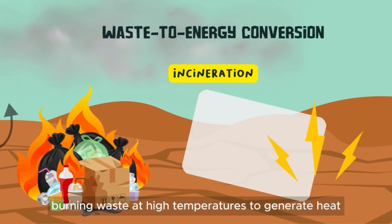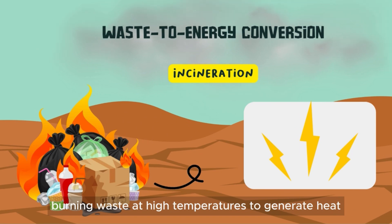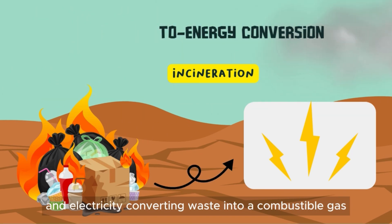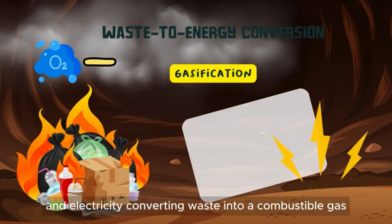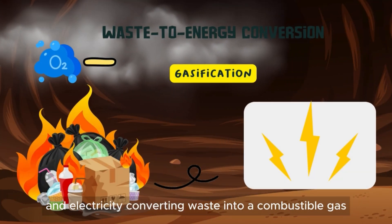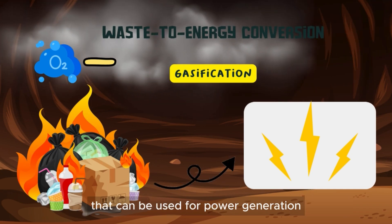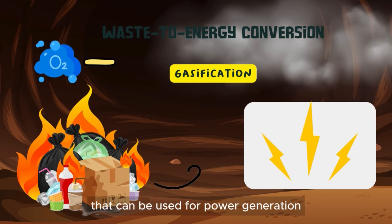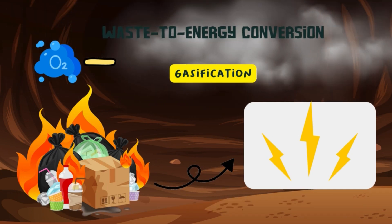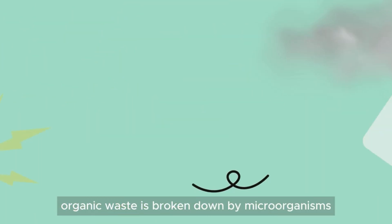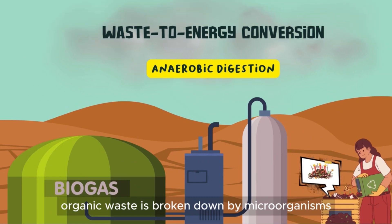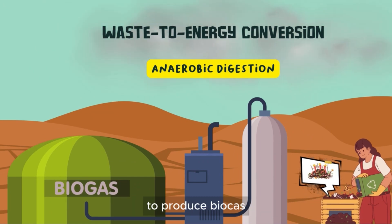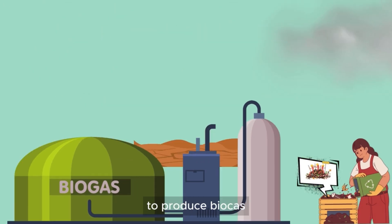Waste-to-energy technologies include burning waste at high temperatures to generate heat and electricity, converting waste into a combustible gas for power generation, and breaking down organic waste with microorganisms to produce biogas.